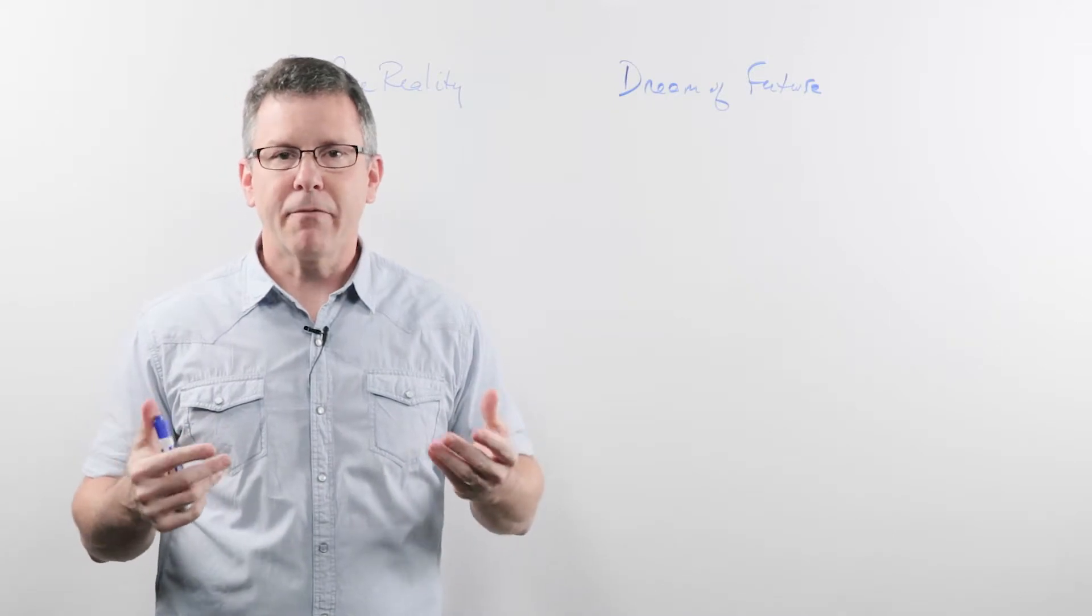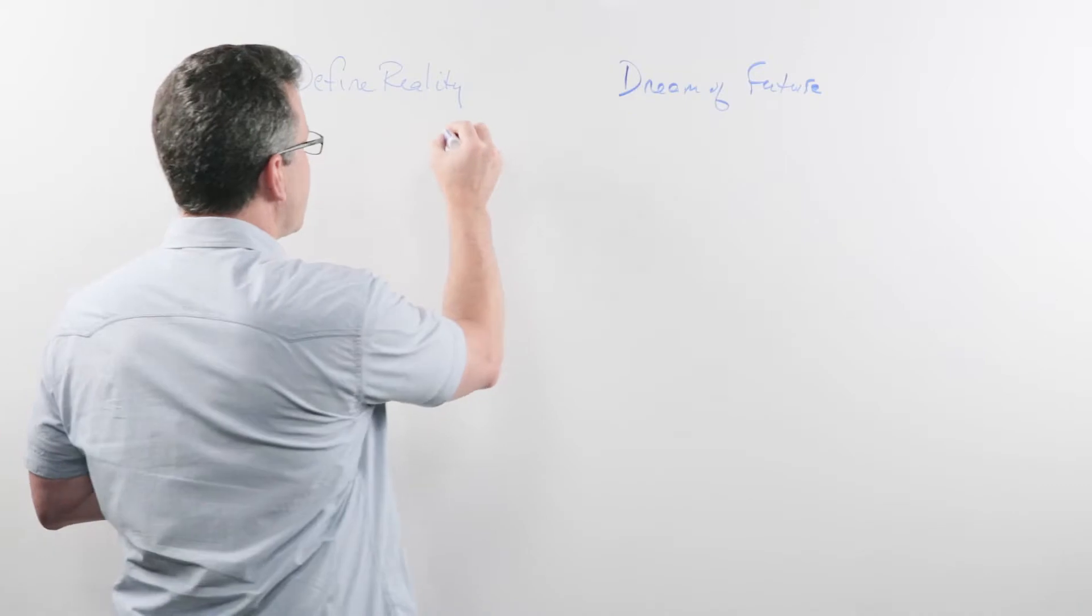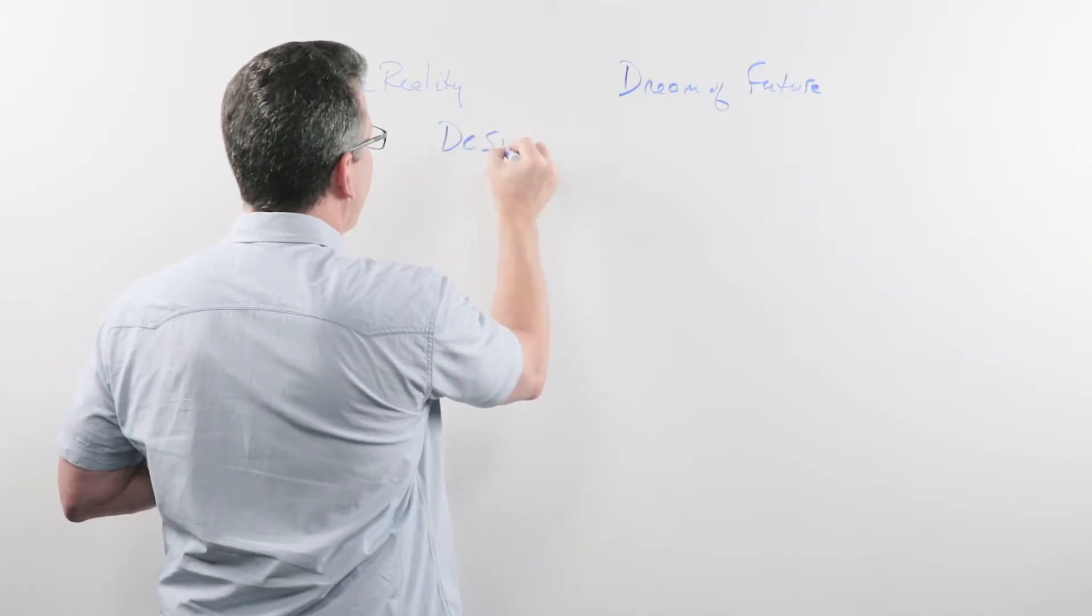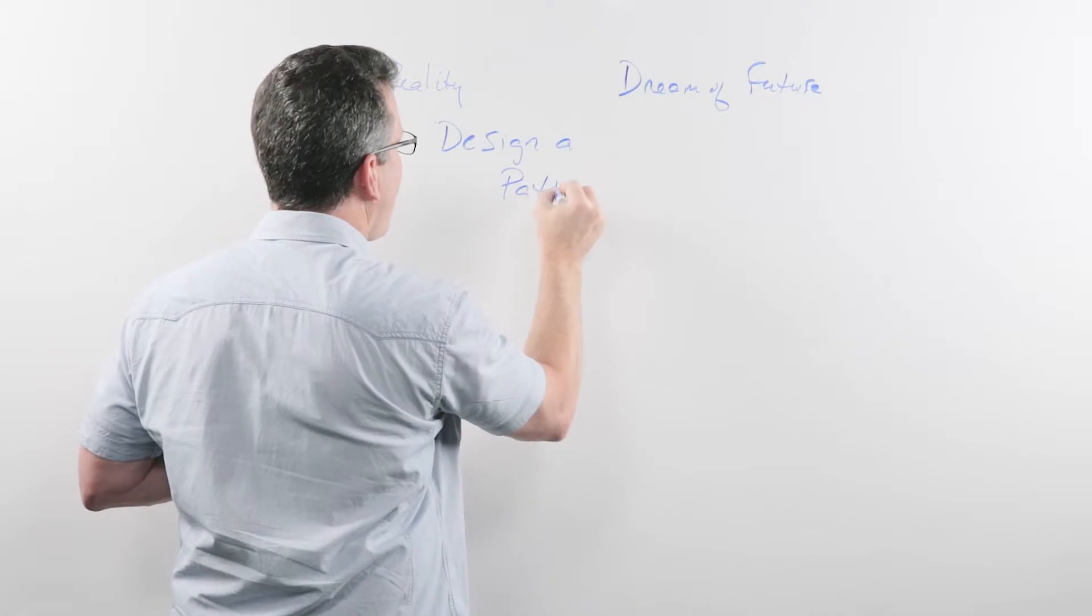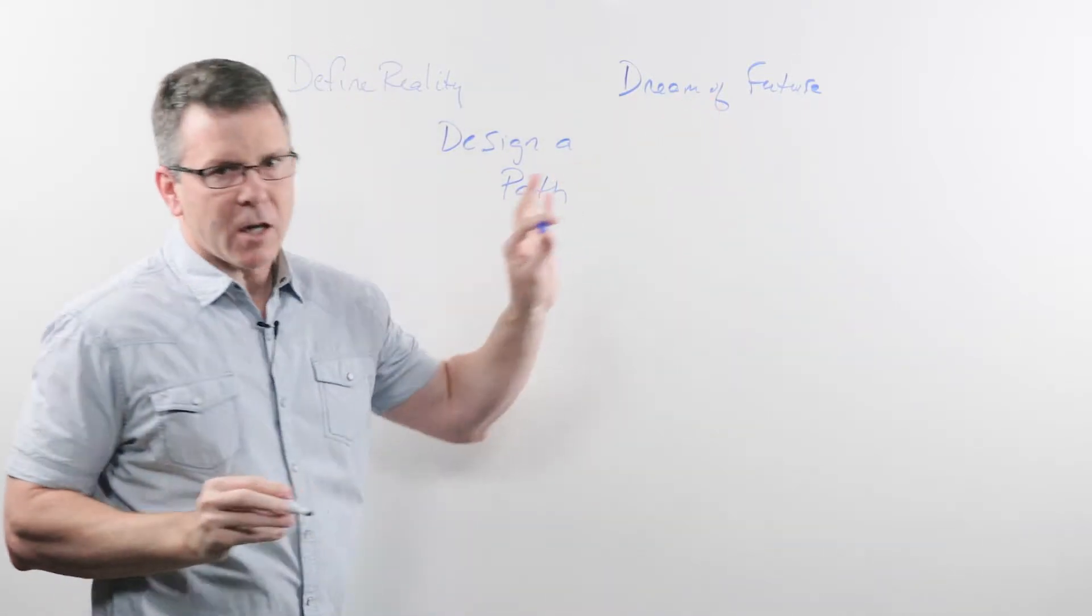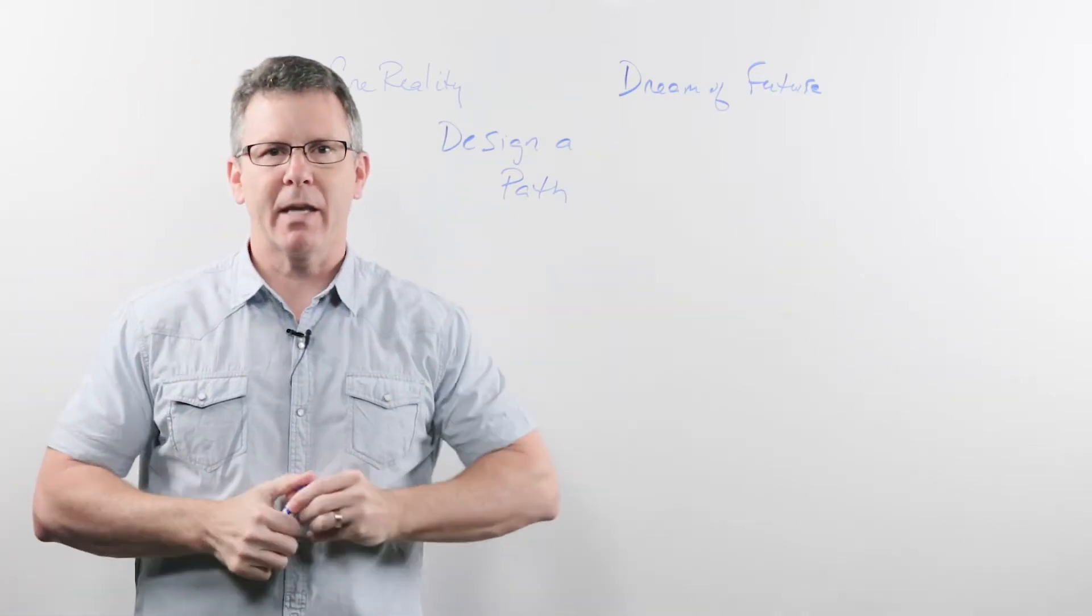So leaders do this: they define reality, dream of the future. And the third responsibility of leaders is to design a path. Dreaming of the future talks about what you want to happen. Designing the path is about how—how will we get there?